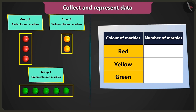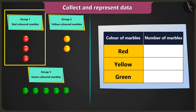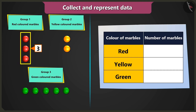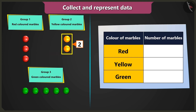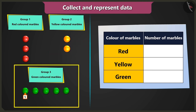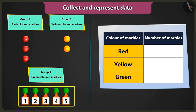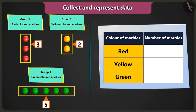What do we have to do next? Now we have to count the number of marbles in each group. There are one, two, three red marbles in the first group. One, two — two yellow marbles in the second group. And one, two, three, four, five green marbles in the third group. Now we have to write these numbers in the table.